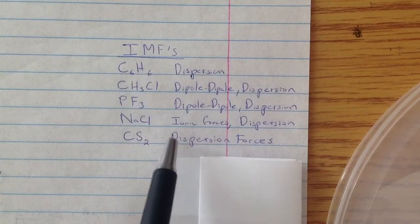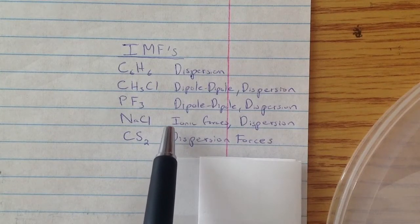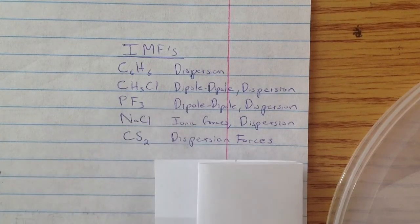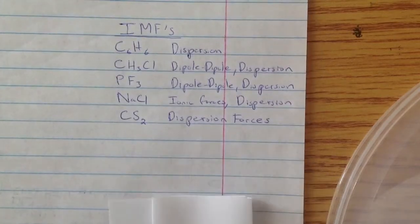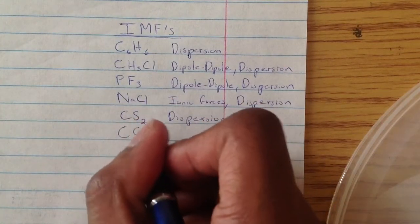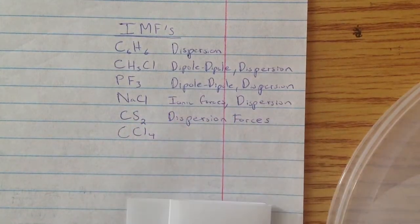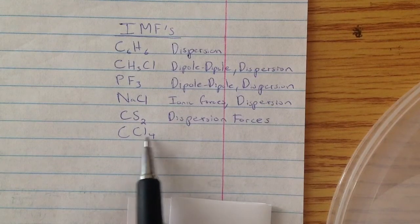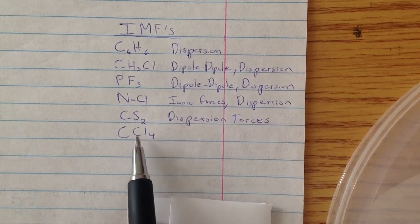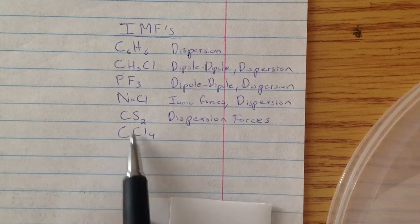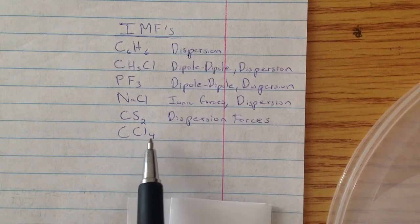Another thing to remember is, for example, if it's CCl4, even though this is electronegative, it's not dipole-dipole because it's actually tetrahedral and it becomes non-polar.